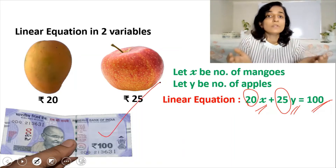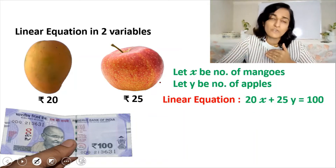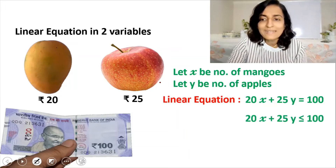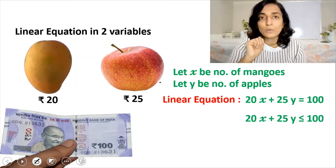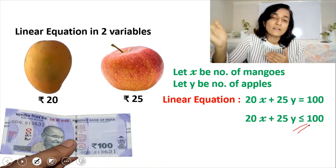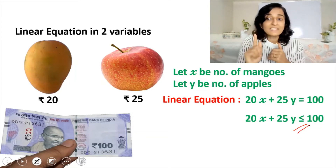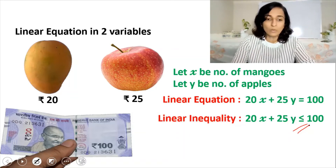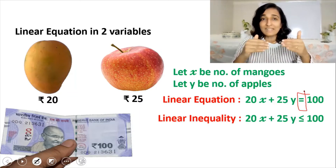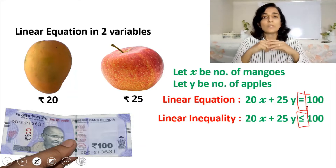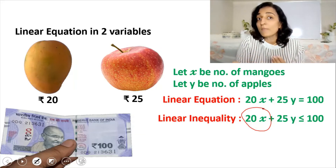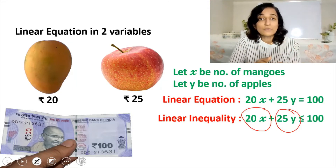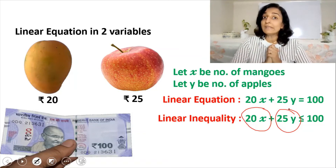Why is it equal to 100 rupees? Because that is the only amount you have. However, you don't have an intention to spend the entire 100 rupees — you can spend an amount less than 100 rupees. So we write the equation as 20x + 25y ≤ 100, which means we do not want to spend the entire 100 rupees and can spend less. That is why the symbol less than or equal to is used. This is known as the linear inequality. The first was an equation with an equal sign; the second is the linear inequality with the less than or equal to sign. 20x is the cost of mangoes and 25y is the cost of apples, so the cost of mangoes plus the cost of apples should be less than or equal to 100 rupees.